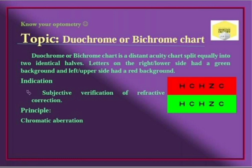This is the chromatic aberration. What is chromatic aberration? In an emmetropic — normal — eye, yellow colors focus on the retina, red light focuses behind the retina, and green light focuses in front of the retina.